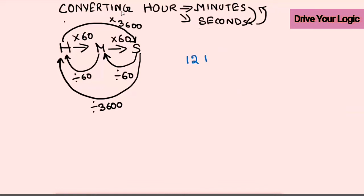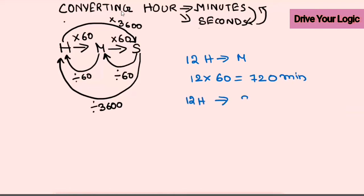Let's take one more example: 12 hours. Convert 12 hours to minutes: 12 × 60. Twelve times six is 72, add the zero — so 12 hours equals 720 minutes.